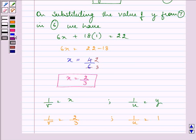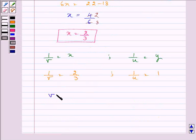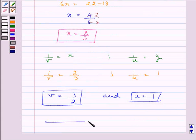So, we can easily say that the value of v is 3 by 2 and the value of u is equal to 1.